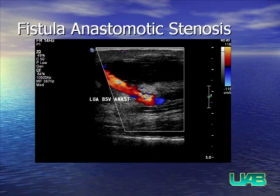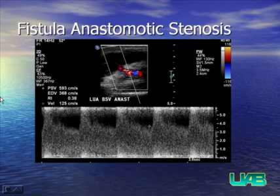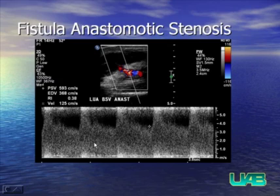This is an example of a fistula with an anastomotic stenosis. Notice the turbulent, disorganized flow in the anastomotic region. The feeding artery two centimeters from the anastomosis shows a peak systolic velocity of 123 centimeters per second. At the anastomosis, there is very turbulent flow with loss of the black window and a peak systolic velocity of 593 centimeters per second — greater than a three-to-one ratio, suggestive of anastomotic stenosis.